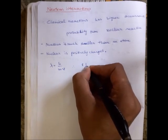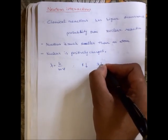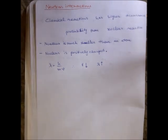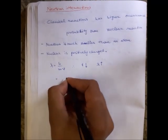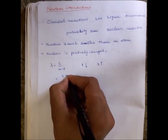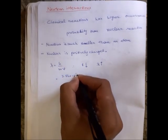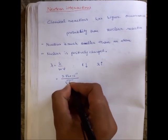This equation stands out to be 2.86 into 10 to the minus 11 by root over of E.